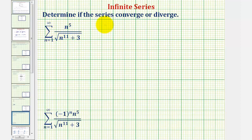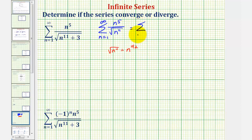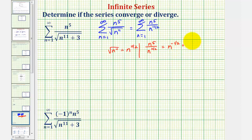The given series resembles the summation from n equals one to infinity of n to the fifth divided by the square root of n to the eleventh. Since the square root of n to the eleventh equals n to the eleven-halves, we write this as the summation of n to the fifth divided by n to the eleven-halves. Subtracting exponents, five minus eleven-halves equals ten-halves minus eleven-halves, or negative one-half. So this becomes the summation of one divided by n to the one-half, which diverges by the p-series test.